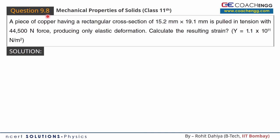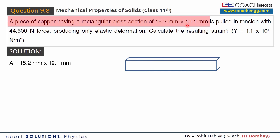Hello friends, I will now discuss question number 8 of the topic mechanical properties of solids. A piece of copper having a rectangular cross-section of 15.2 mm by 19.1 mm, so this is the area of cross-section, 15.2 mm into 19.1 mm. This is pulled in tension with a 44,500 Newton force.